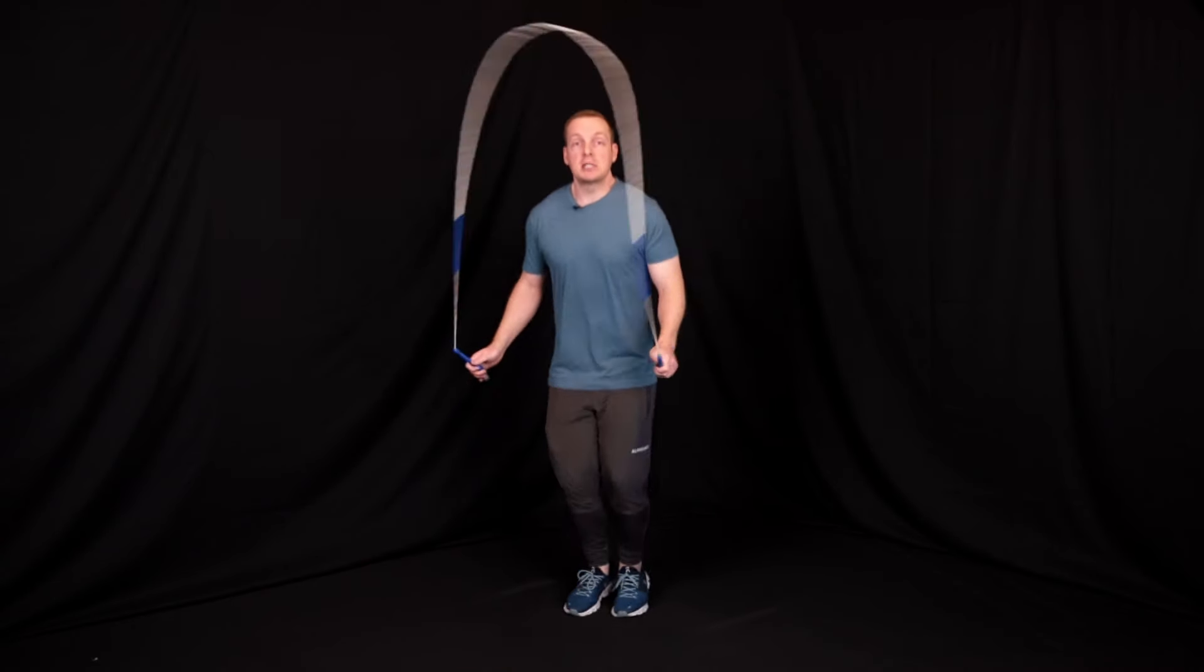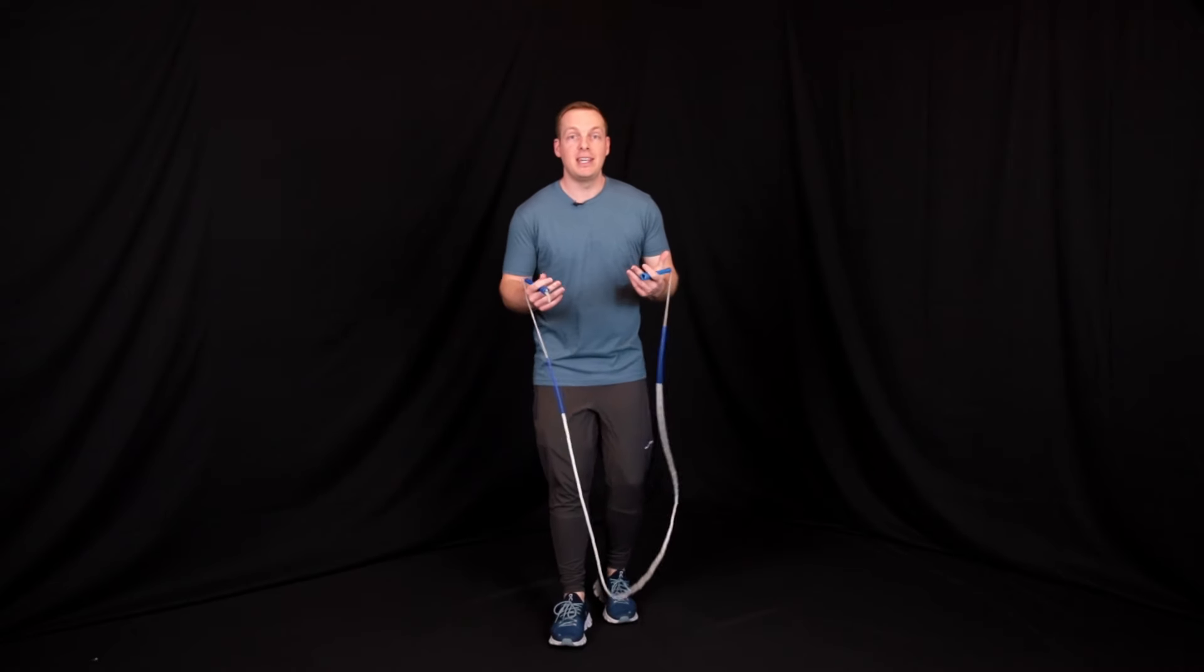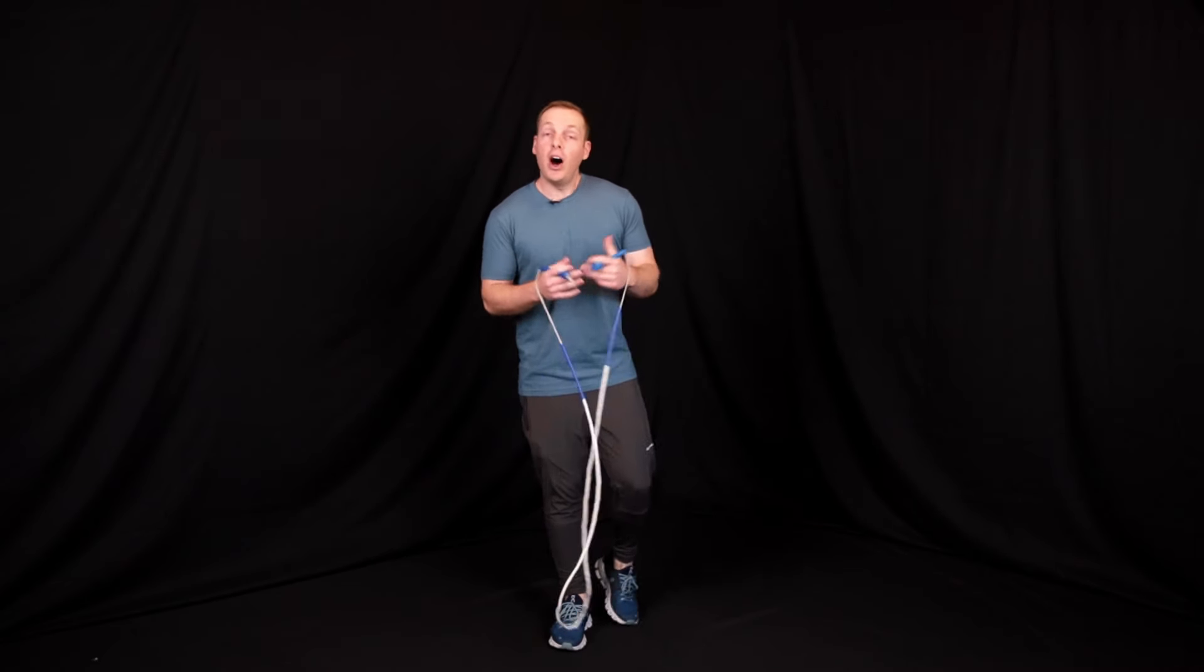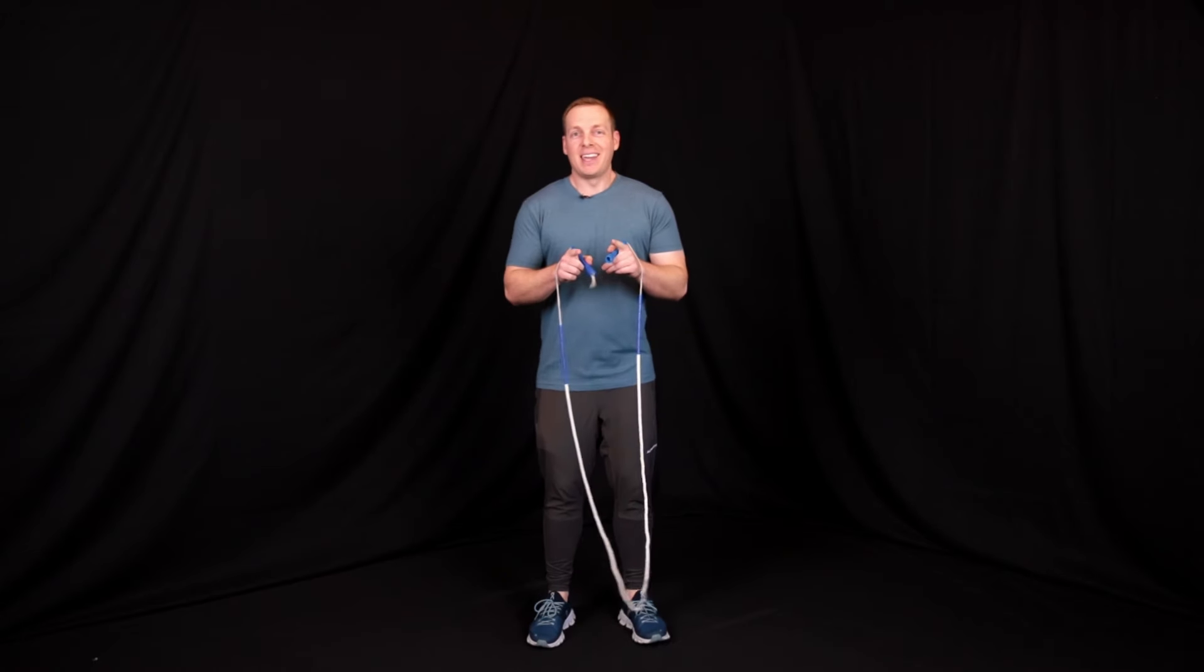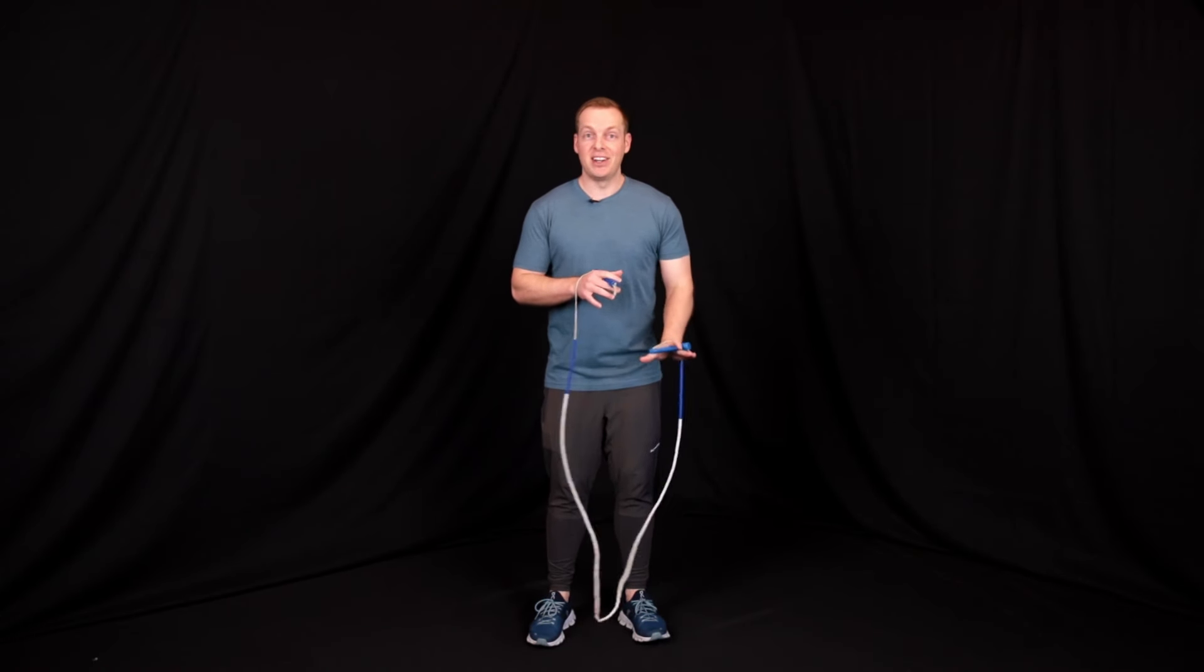If you keep those single-unders really low to the floor, and you just explode as high as you can go for the double-under, you don't have to change really anything at all other than your bound height. So thinking about having really low single-unders, really brisk single-unders, and a very high explosive bound for that double-under is gonna get you a lot closer to being relaxed.